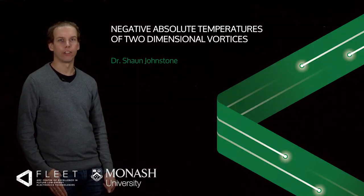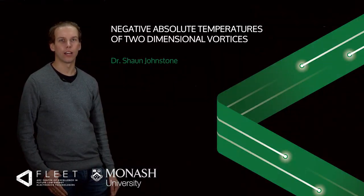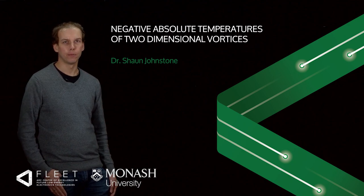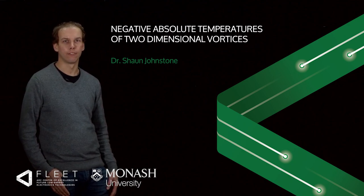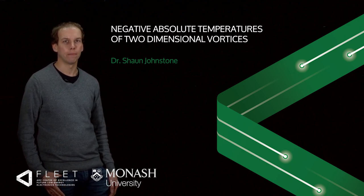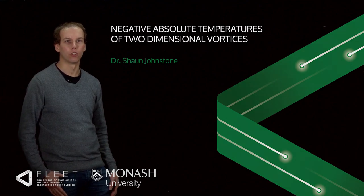In Lars Onsager's 1949 paper titled Statistical Hydrodynamics, he described two-dimensional turbulence using ideas from thermodynamics, assigning a temperature to distributions of vortices.